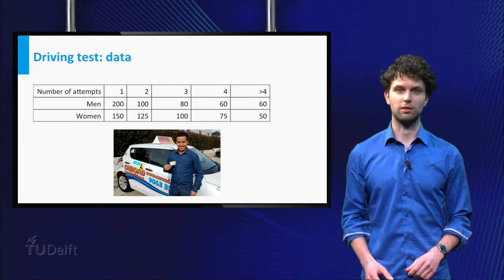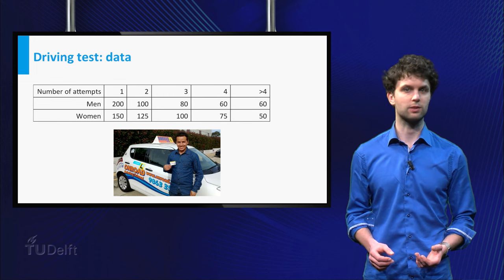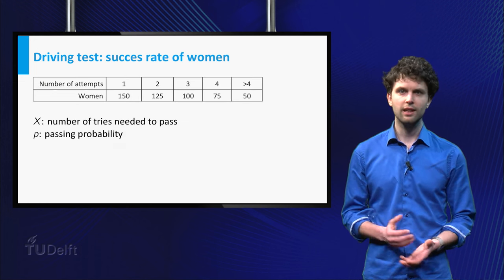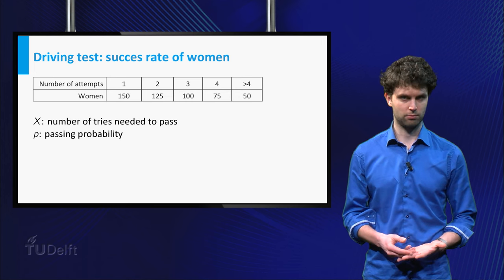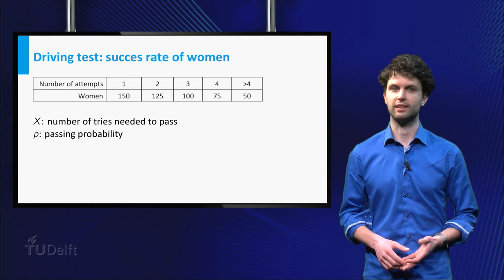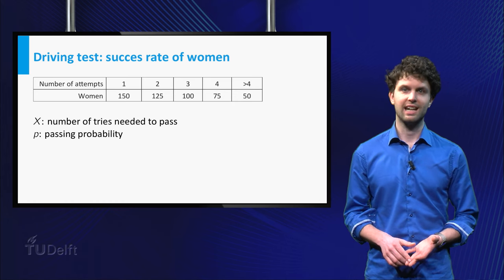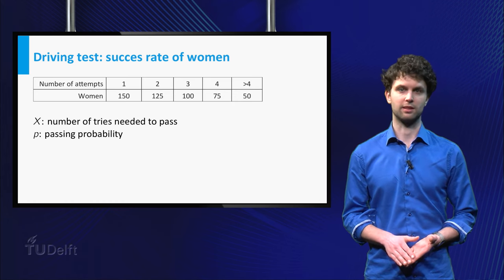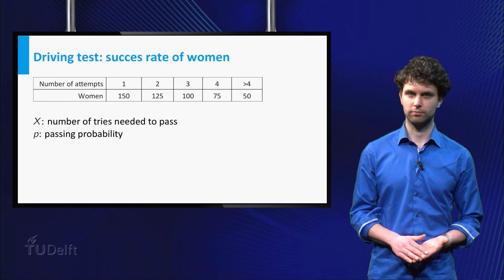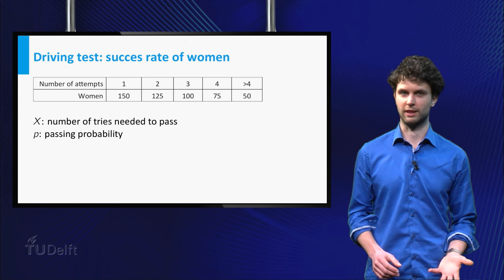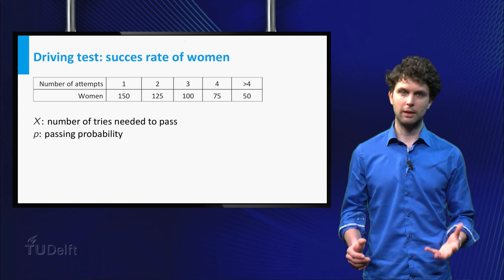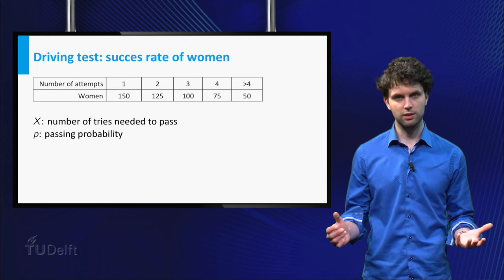Let us start by estimating the probability of passing the driving test for women. Denote by capital X the number of tries needed to pass for women. Suppose that every try is independent of the tries before, and that at each try the probability P of passing is the same. Also this probability is assumed to be the same for all women. We could argue about these assumptions, but for the moment, let's work with them.